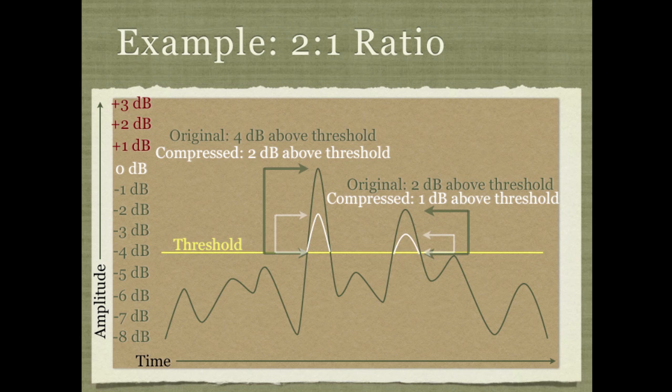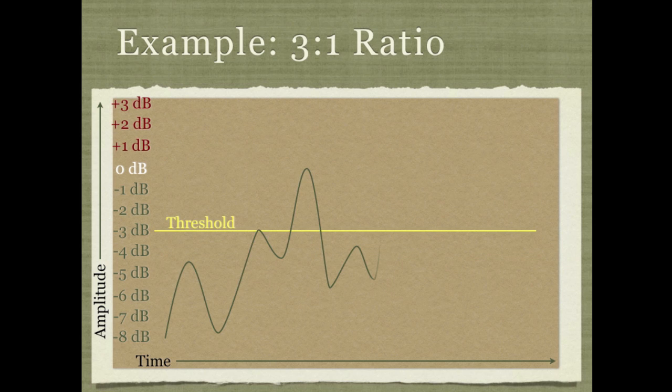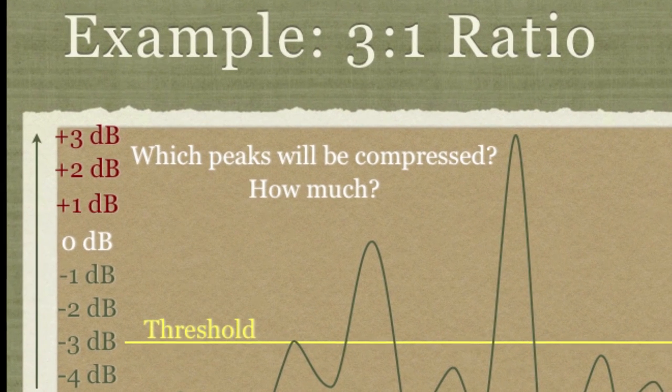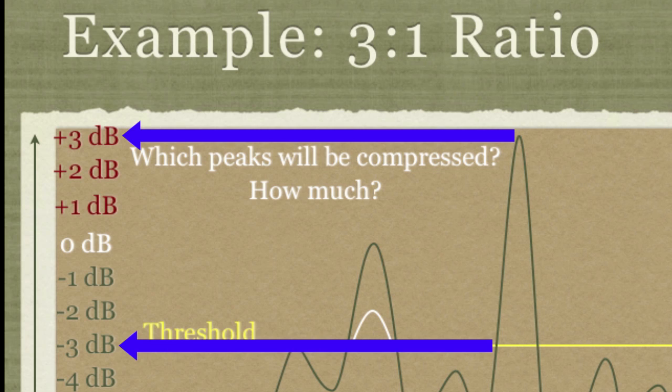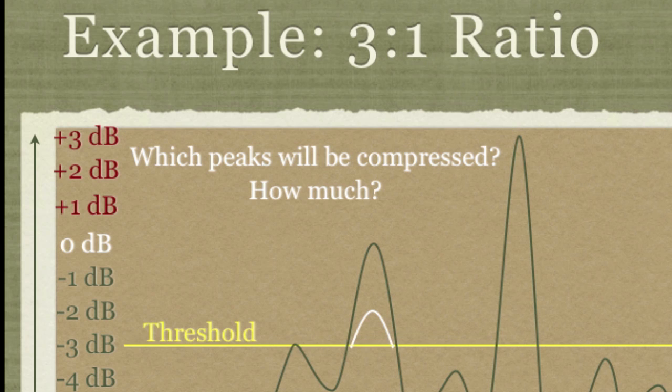Let's briefly look at another ratio, 3 to 1. So let's say we have this sound. And the question you ask yourself here is which peaks will be compressed and by how much? If this is a 3 to 1 ratio, for example, notice that peak on the left. Well, since it tries to go 3 decibels above the threshold, it's going to be allowed to go 1 decibel above the threshold. The much taller peak on the right, if you count up from minus 3 where the threshold is, let's see, 1, 2, 3, 4, 5, 6 decibels above the threshold, 3 to 1 ratio, do some simple division, and you'll see that it's going to go 2 decibels above the threshold.